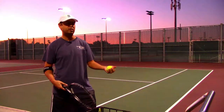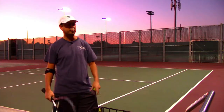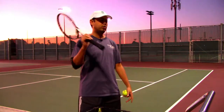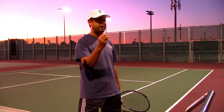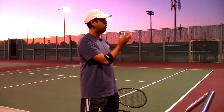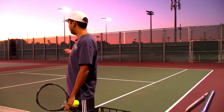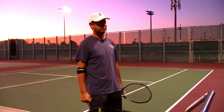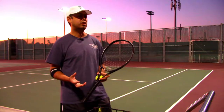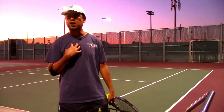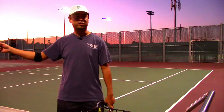One: the server — it could be the returner too, but let's use the example of the server. The server needs to go to a spot on the court, a spot in the box. There needs to be an intention to go somewhere. In this case, my intention as the server is to go to the tee. The second thing is you've got to know where to move — the server will need to move to the left and the poacher needs to poach that ball.